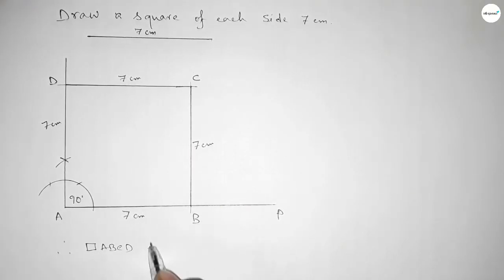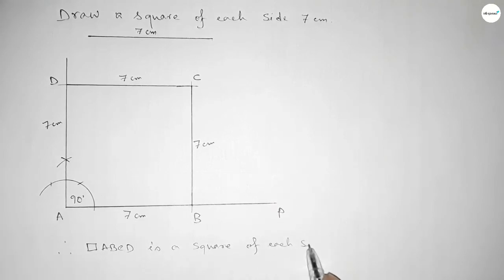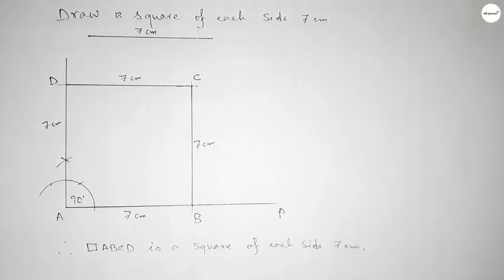ABCD is a square of each side length 7 centimeters. That's all. Thanks for watching — if this video is helpful to you, then please share it with your friends. Thanks.